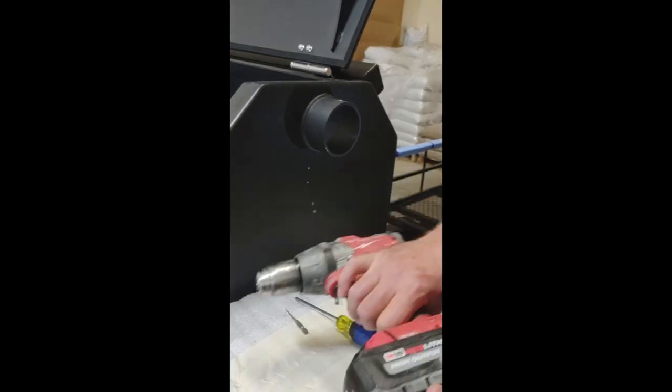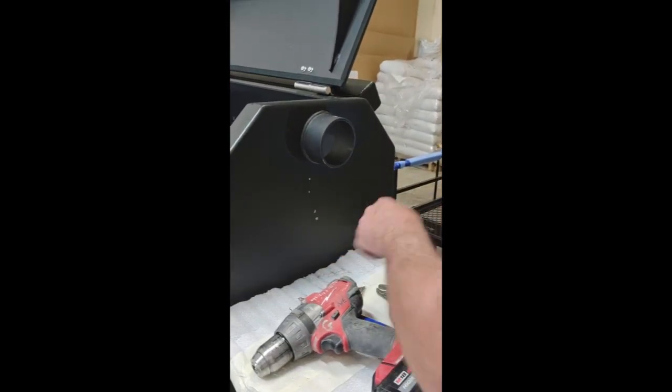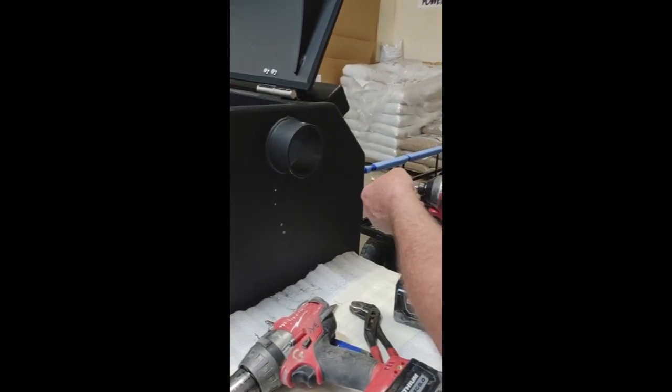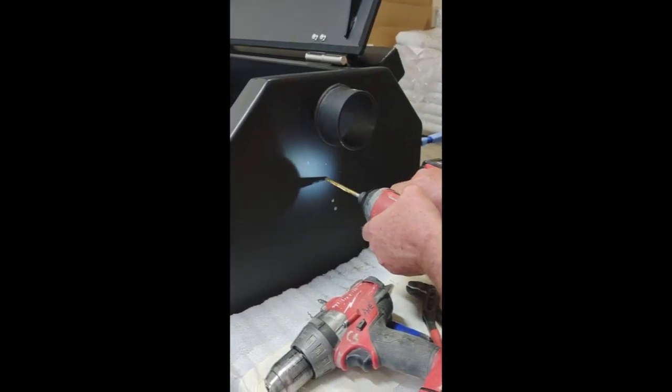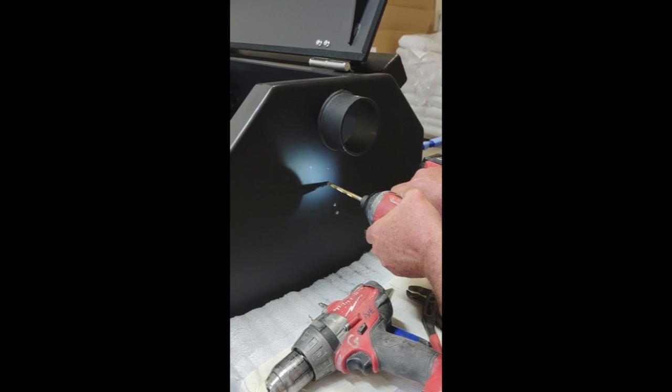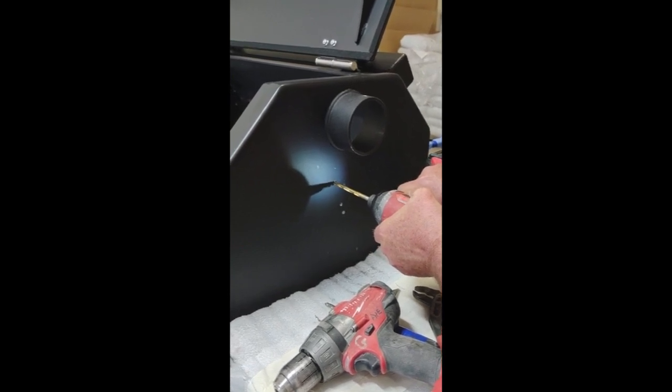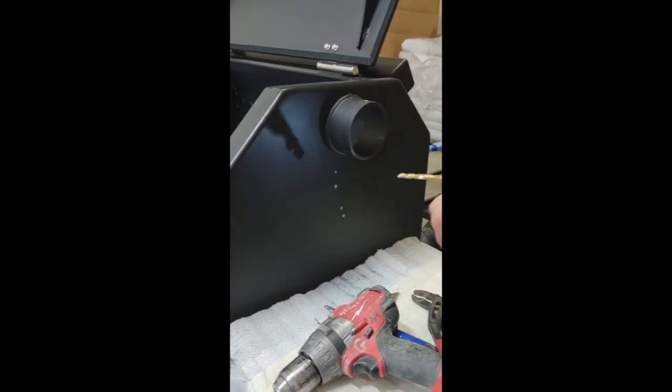And now we're going to switch to the... I think what I'm going to do, I'm going to go with the quarter inch first on the three quarter inch hole, because of the unibit. Alright, that's done.